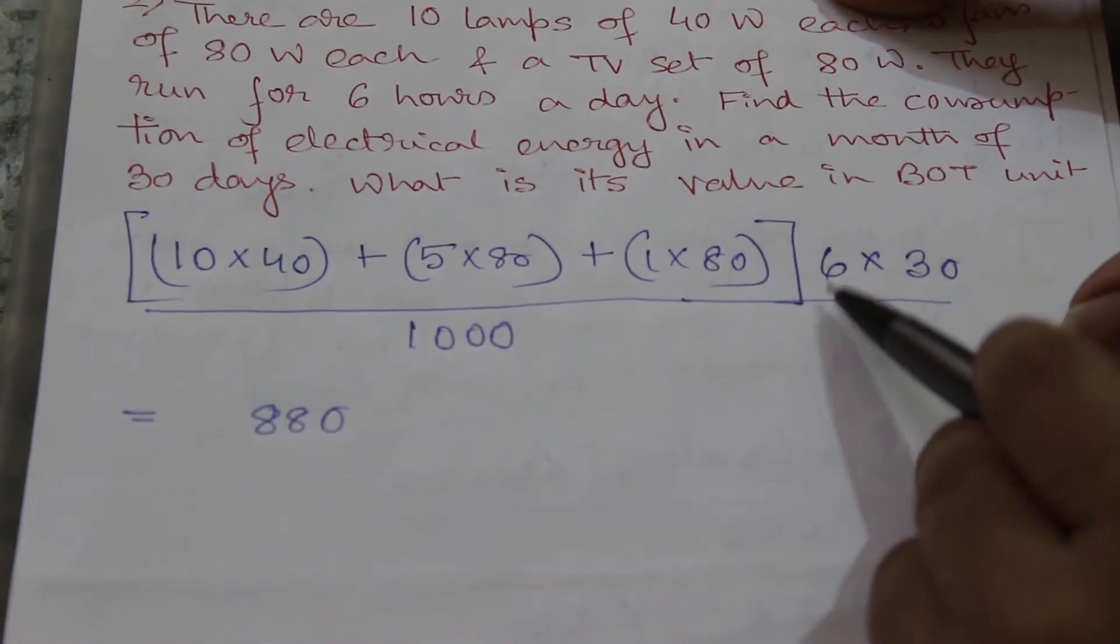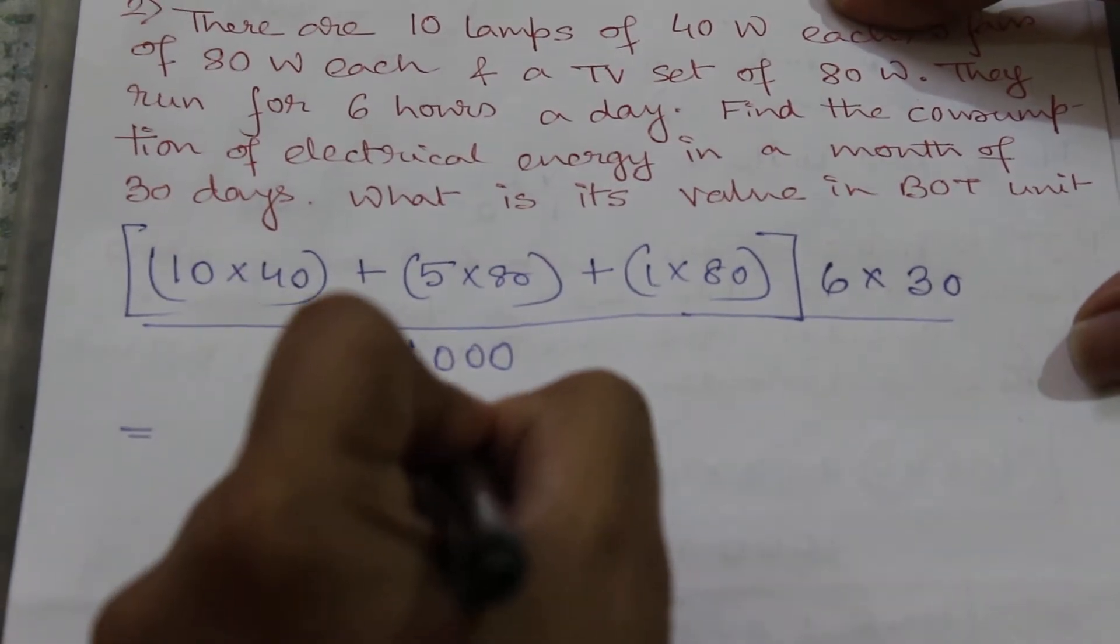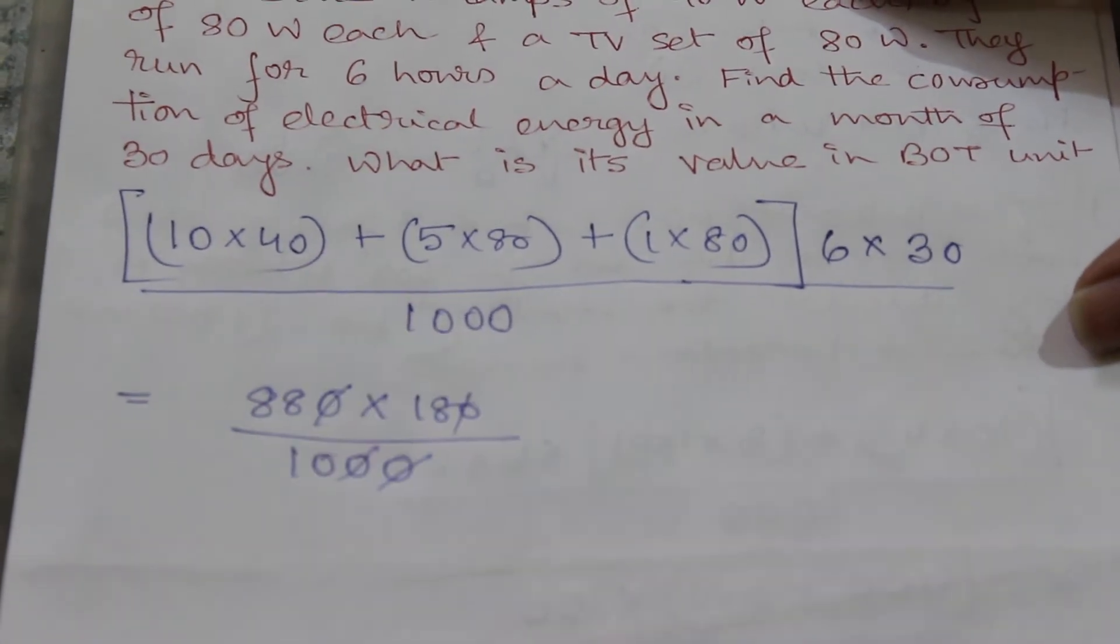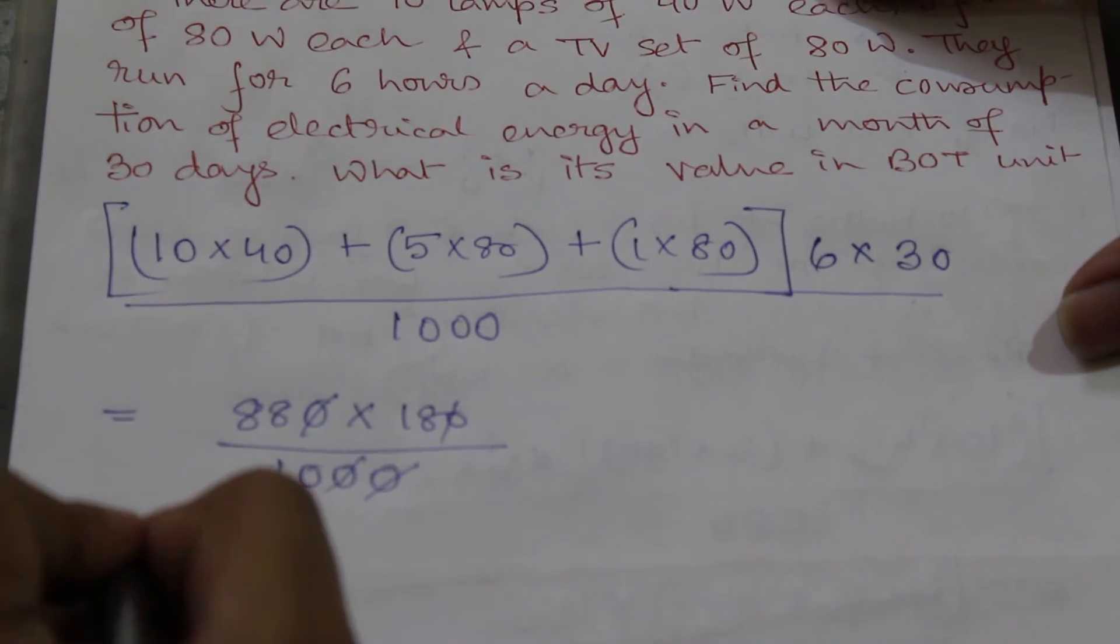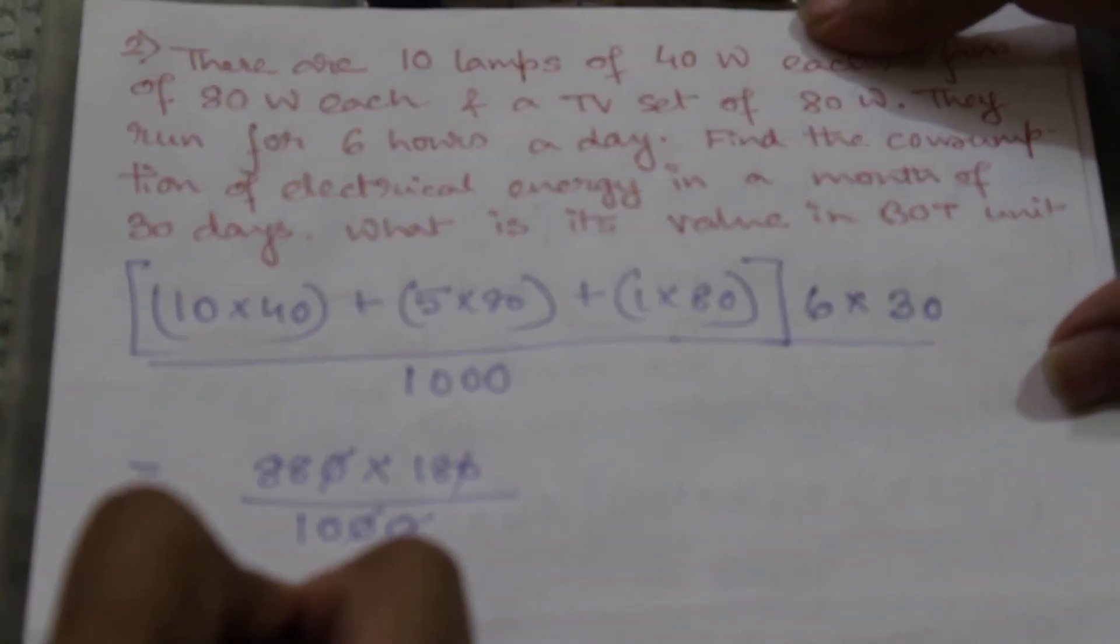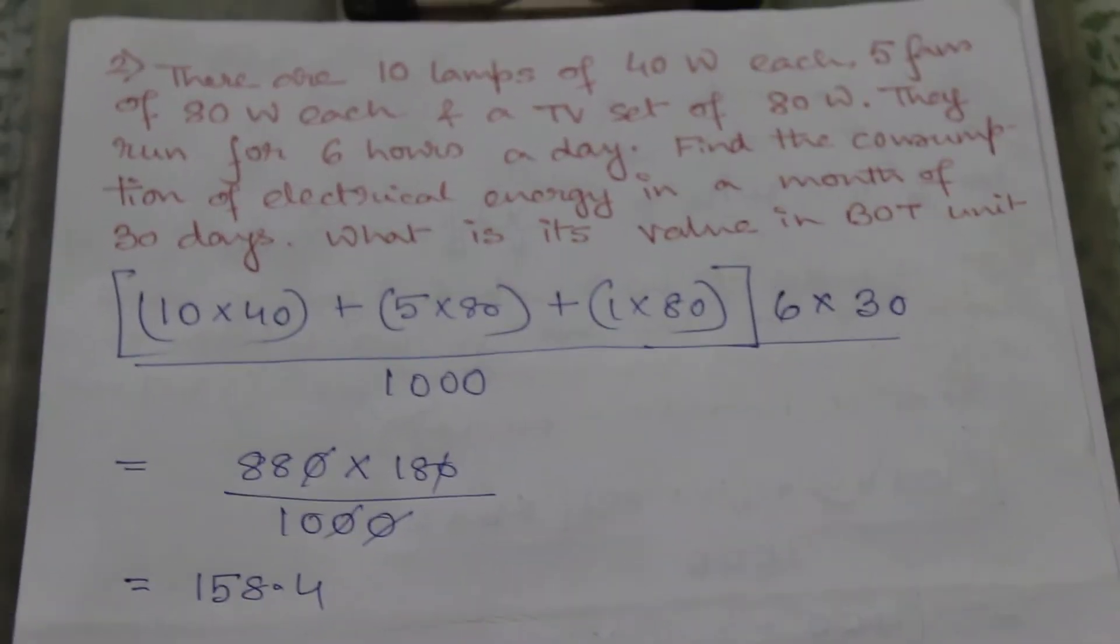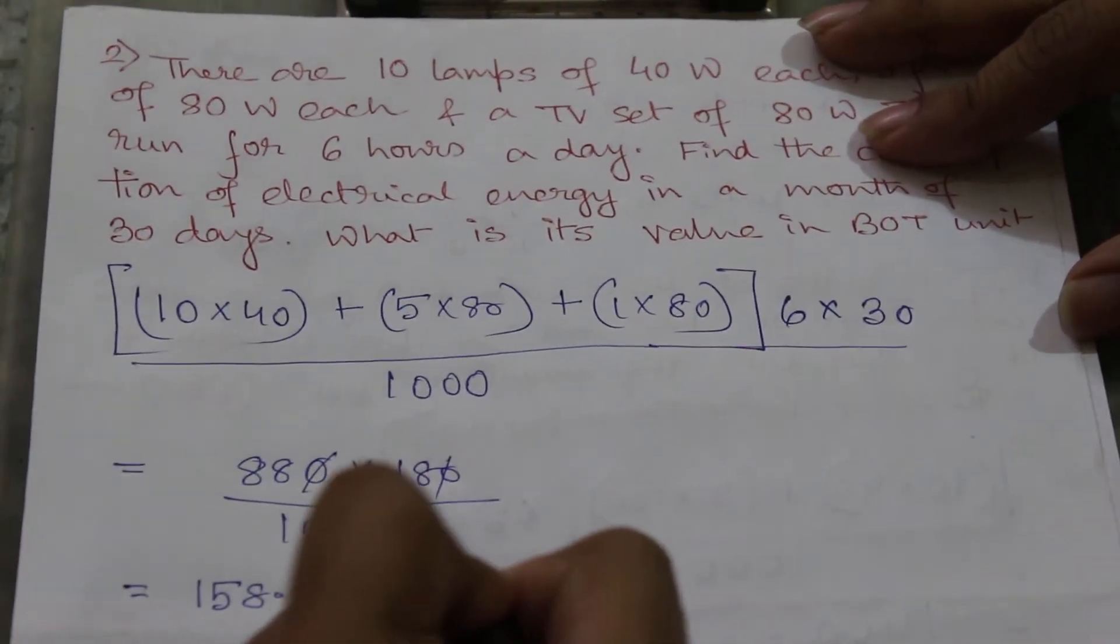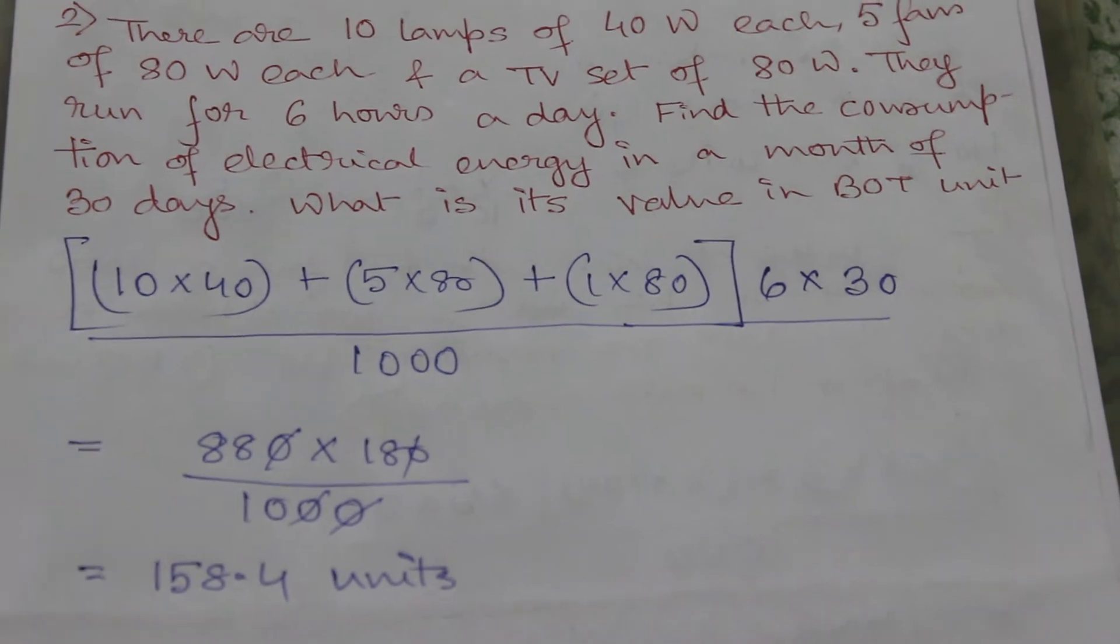So if we calculate this now, this whole thing will be equal to 880, and this 6 into 30 will be equal to 180 by thousand. So these two zeros will be cancelled out. So the final answer will be 158.4. Number of BOT units will be equal to 158.4, which is the monthly consumption of electricity.